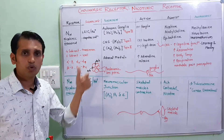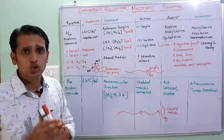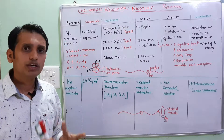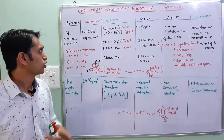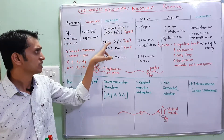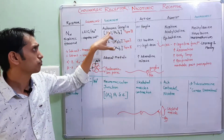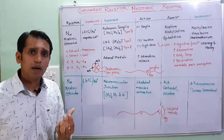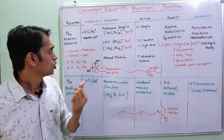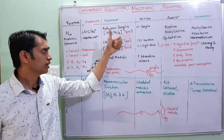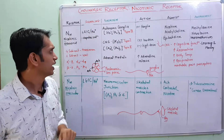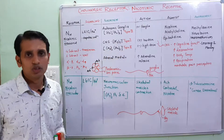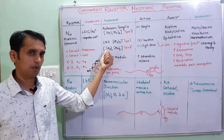Two molecules of acetylcholine are required for the activation of nicotinic receptors. When they bind to the NN or NM receptor it will be activated, but the subunit composition is different based on their location. The NN receptor is mainly found in the autonomic ganglia, CNS, and adrenal medulla. One subtype is composed of 2 subunits of alpha-3 and 3 subunits of beta-2. Another subtype has 5 subunits of alpha-7, and another has 2 subunits of alpha-4 and 3 subunits of beta-2.